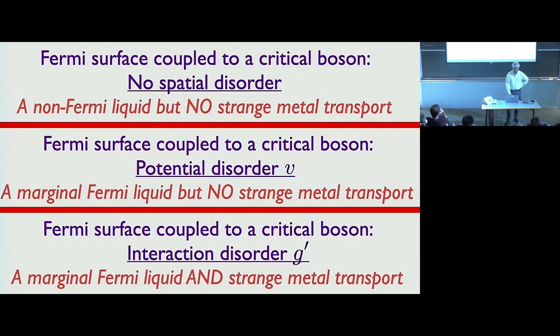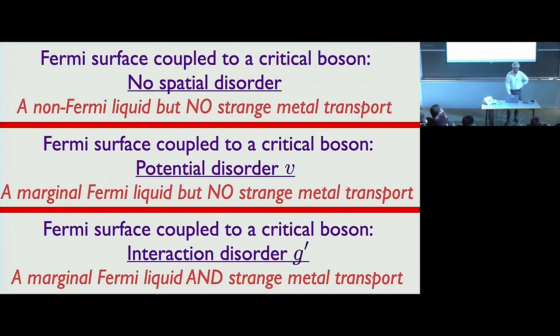So the conclusion: Fermi surface coupled to critical boson with no disorder is a non-Fermi liquid but has no strange metal transport. With potential disorder you get marginal Fermi liquid behavior in the self-energy anyway, but still no strange metal transport. So what's the answer? The answer is interaction disorder.